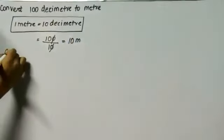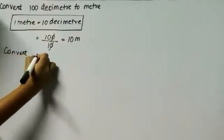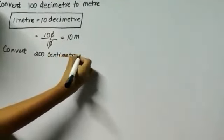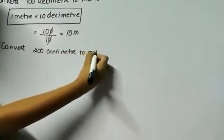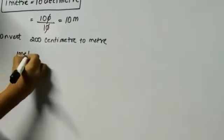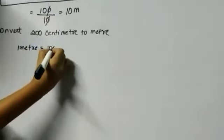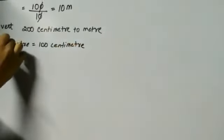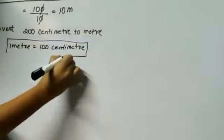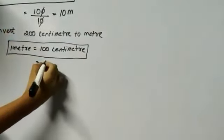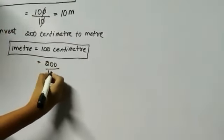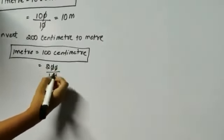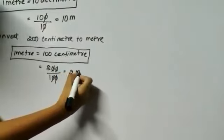The second sum: convert 200 centimeters to meters. We know that 1 meter equals 100 centimeters. So you divide 200 by 100. When we cancel the zeros, 2 divided by 1 gives 2 meters.